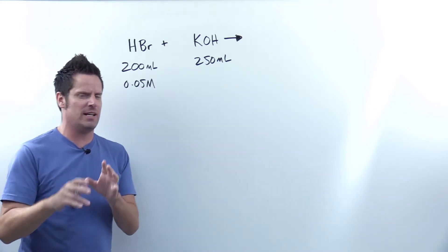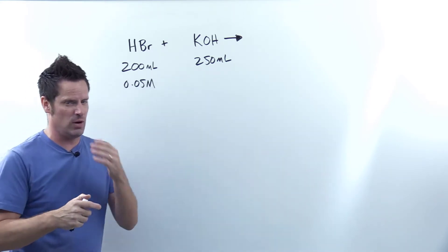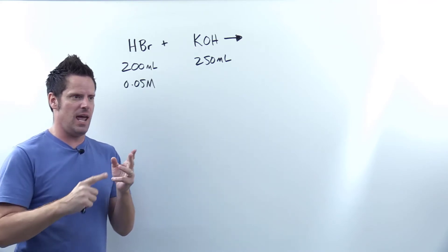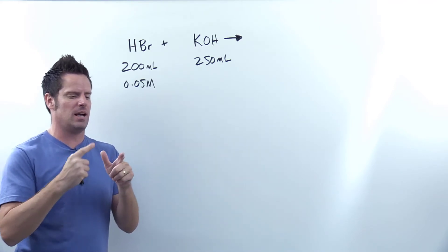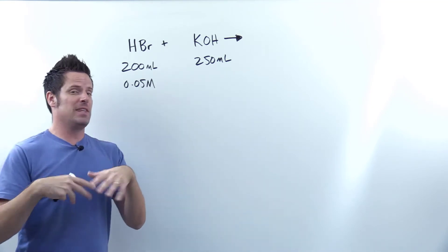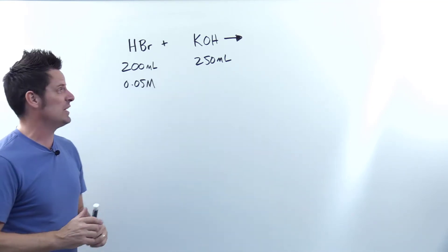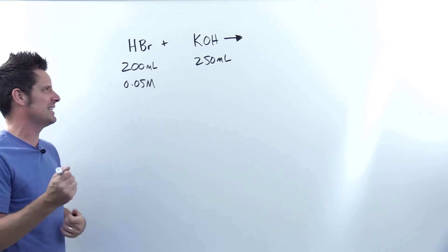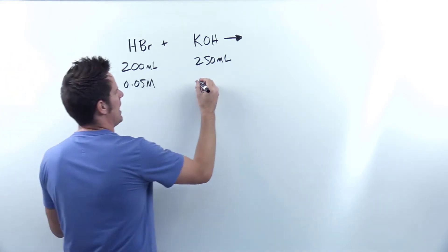It turns out that there are multiple correct ways of doing this kind of problem, including using the equation that I talked about in our acid-base titration video earlier: MANA times VA equals NB times MB times VB. You actually don't have to use that equation. I think in this case, it's probably a little bit easier not to, and I'll show you why.